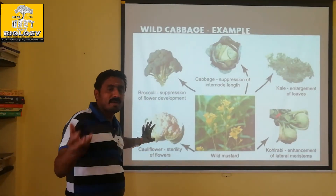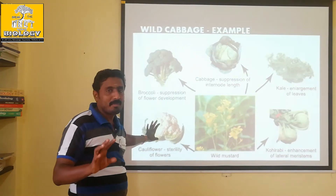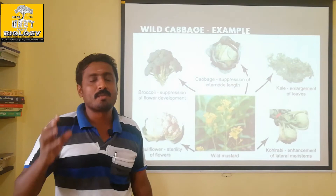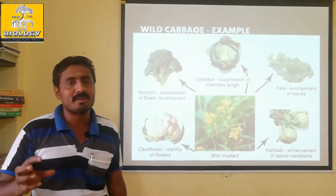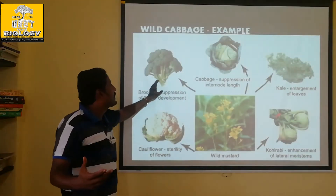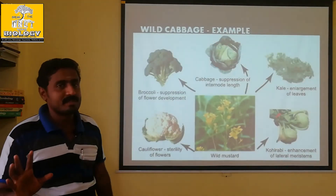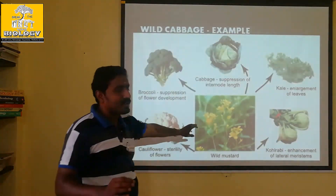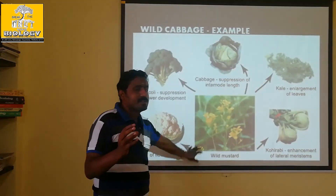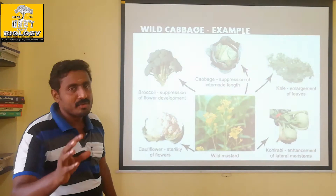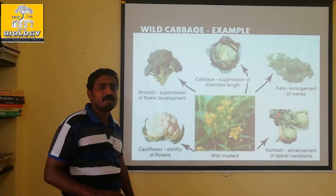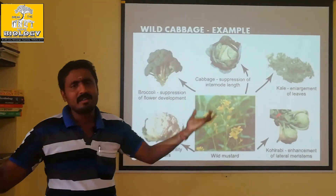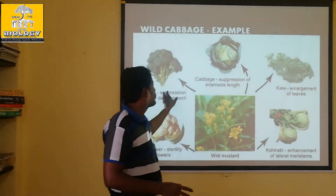If we increase the population in the same way, we can also increase it through tissue culture. In artificial selection, human beings can see and select a character, and tell the entire character about nature. This is also called an experiment.